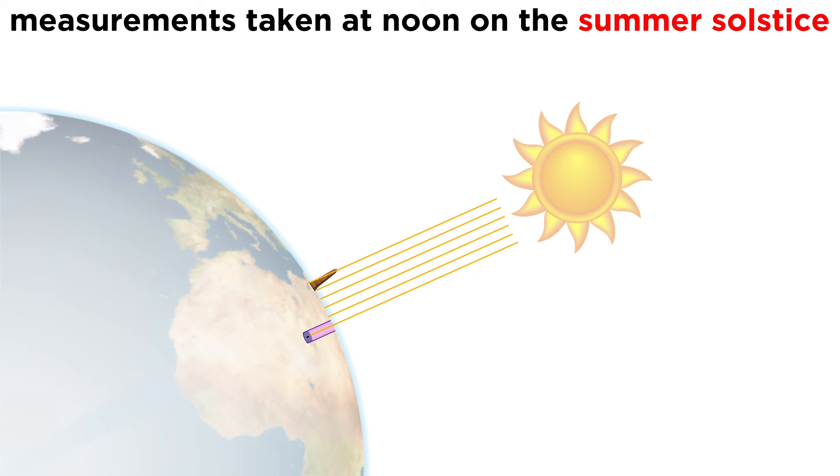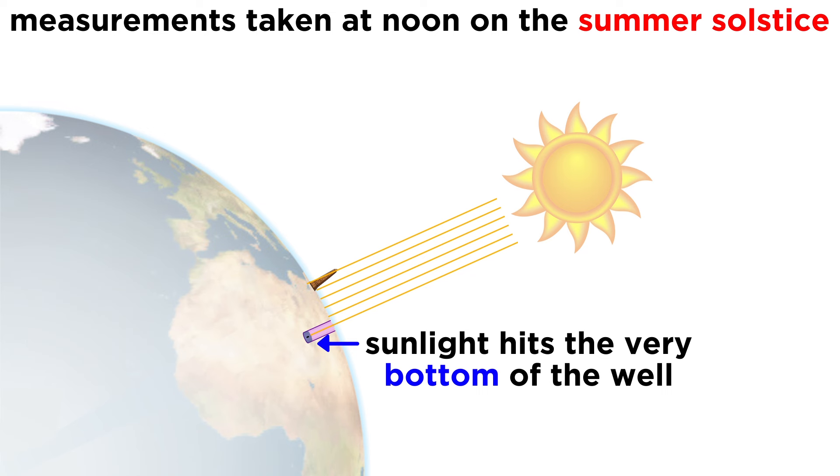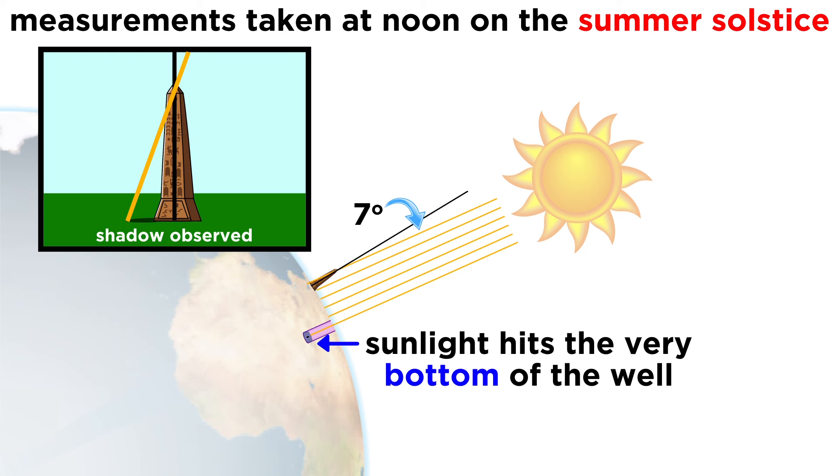At noon on the summer solstice, the sun shone directly down the well, illuminating the very bottom. Simultaneously, the sun cast a shadow on the obelisk in Alexandria, revealing that the sun was seven degrees off the vertical.